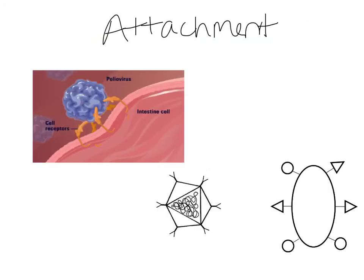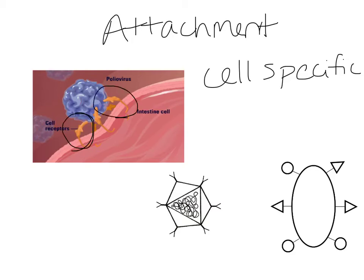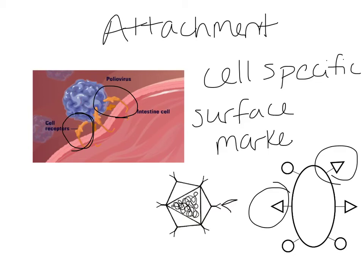Remember how a virus attaches from when we talked about viral structure - viruses are cell-specific. They can't just infect any cell they come across; they have to have surface markers that match up with surface receptors on the host cell. Here this virus has triangular-shaped receptors and can bind with this host cell. Surface receptors are what make the virus cell-specific - for example, a cold virus affects your respiratory passageways but not stomach cells because the surface markers don't match.